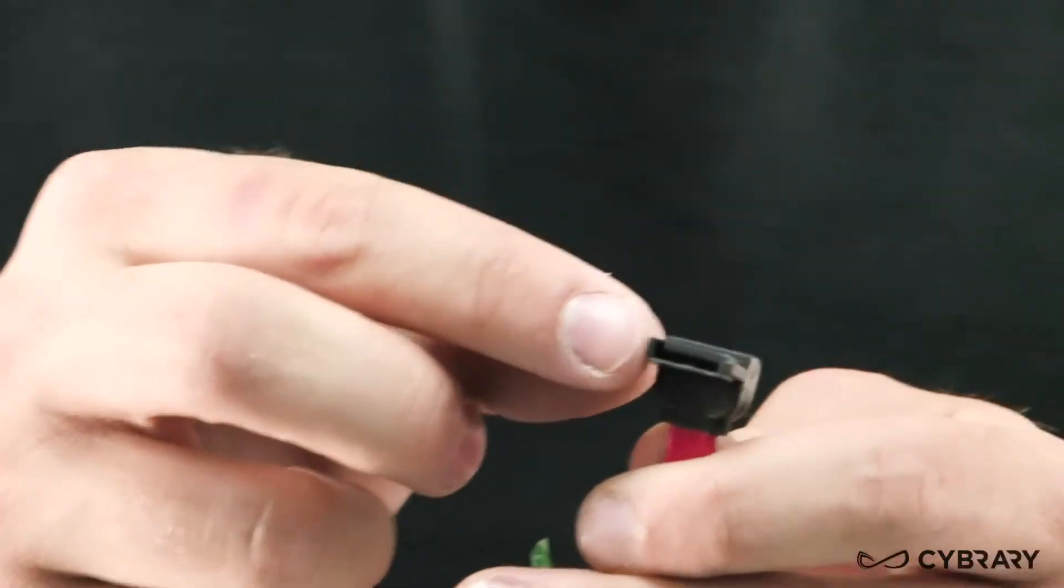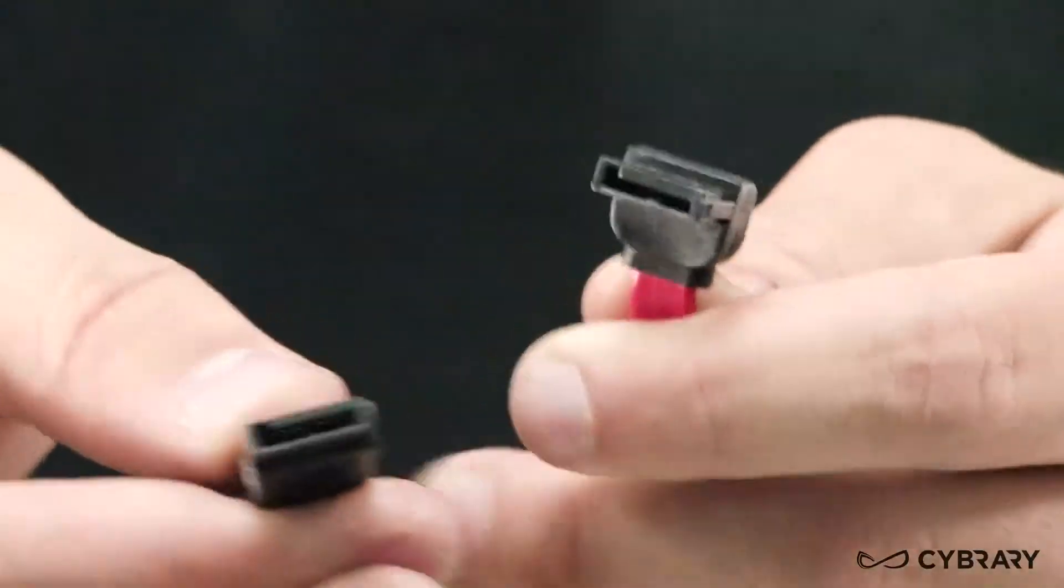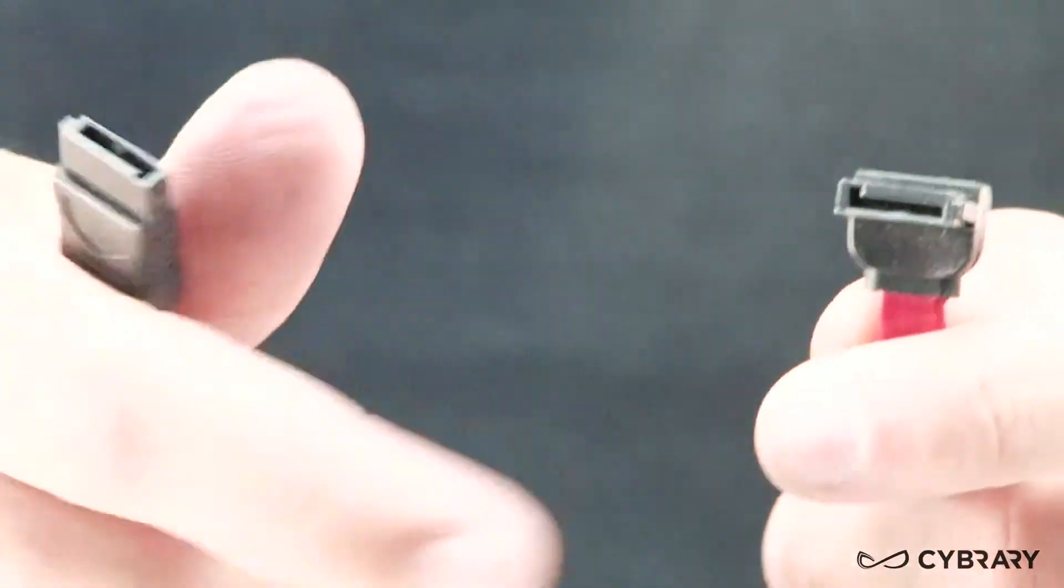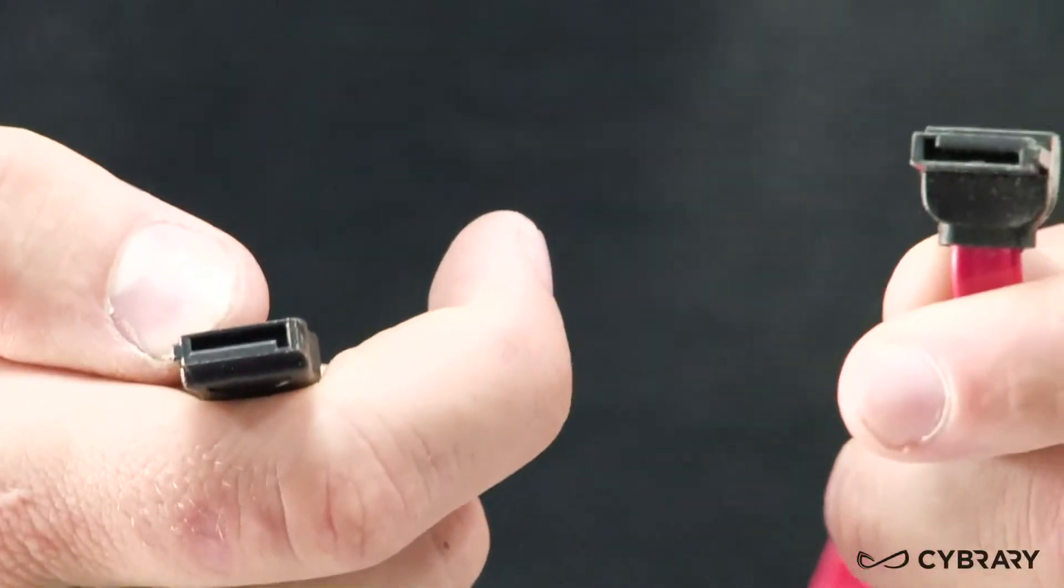What does our SATA cable look like? This one actually has a bent end to make it a little bit easier to get into our hard drives, and the other end we can just plug into the motherboard.